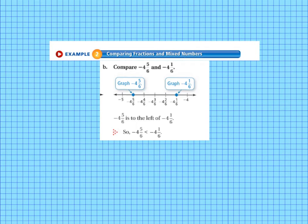Now we're looking at example 2b. We are still comparing fractions and mixed numbers. And we have negative 4 and 5 sixths and negative 4 and 1 sixths. So we graph them so negative 4 is here. And then we're counting by sixths. So negative 4 and 1 sixths, negative 4 and 2 sixths, and so on, until we get to negative 4 and 5 sixths. So negative 4 and 5 sixths is to the left of negative 4 and 1 sixths. So that means that negative 4 and 5 sixths is less than negative 4 and 1 sixths.